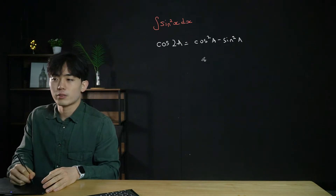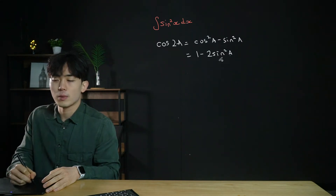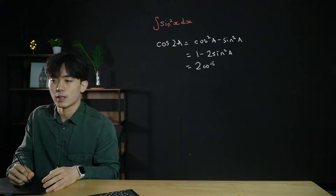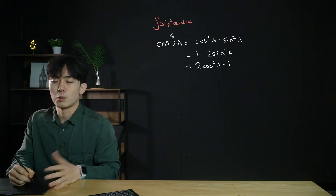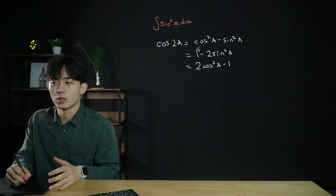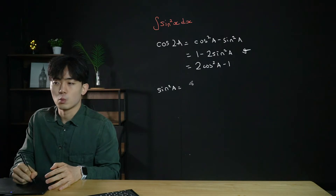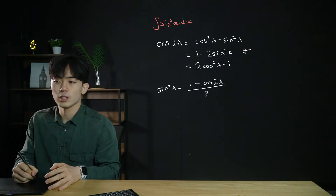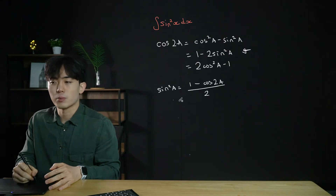It's got three different ways we can write it. We can write it as cos²a - sin²a, or as 1 minus 2 sin²a, or in terms of cos squared as 2cos²a minus 1. We're looking for sin²a so we're going to use the second form. Rearranging: sin²a equals (1 minus cos 2a) all over 2.